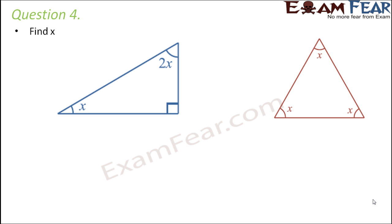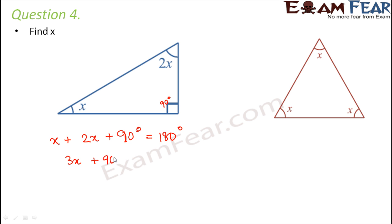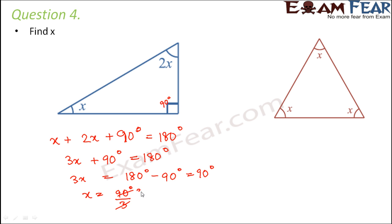Question number 4: here we have a triangle where this angle is 90 degrees, this is x, and this is 2x. The sum of three angles of a triangle is 180 degrees, so x plus 2x plus 90 is equal to 180 degrees. That gives 3x is equal to 180 minus 90, which is 90 degrees, so x is equal to 90 divided by 3, which is 30 degrees.